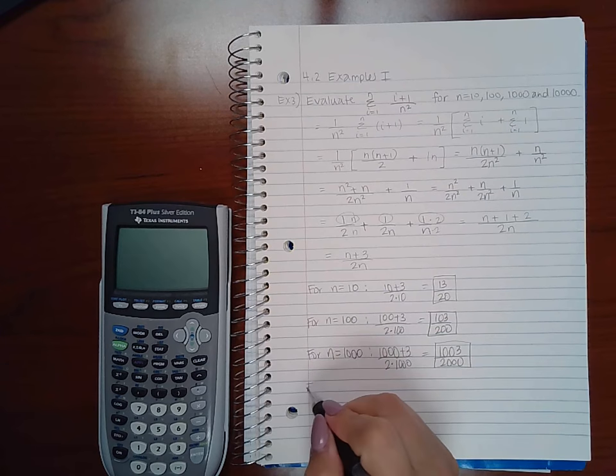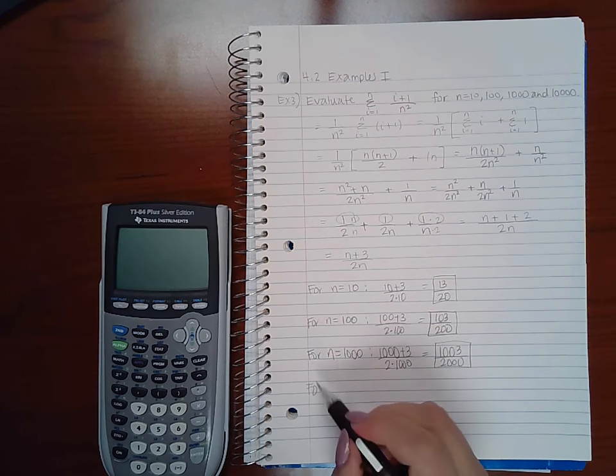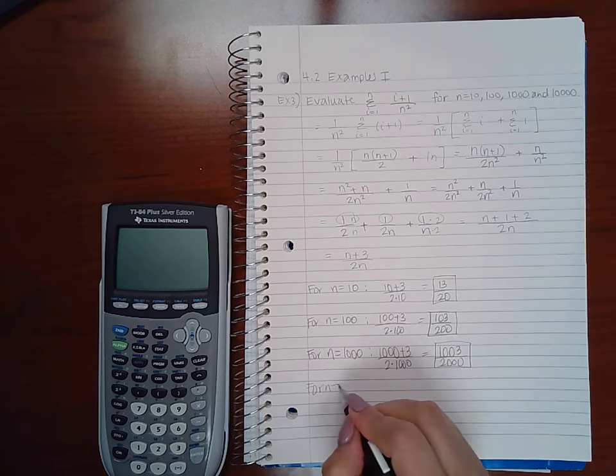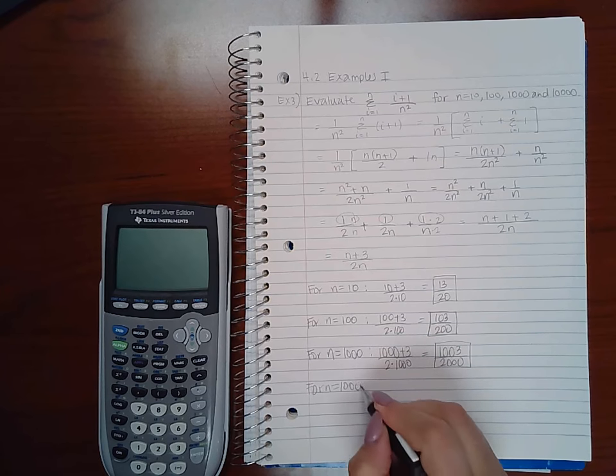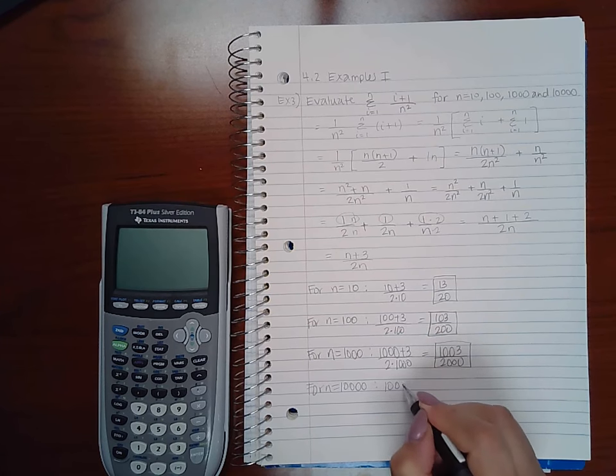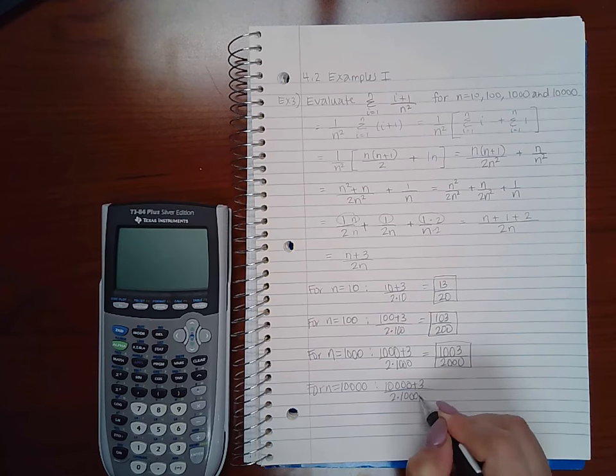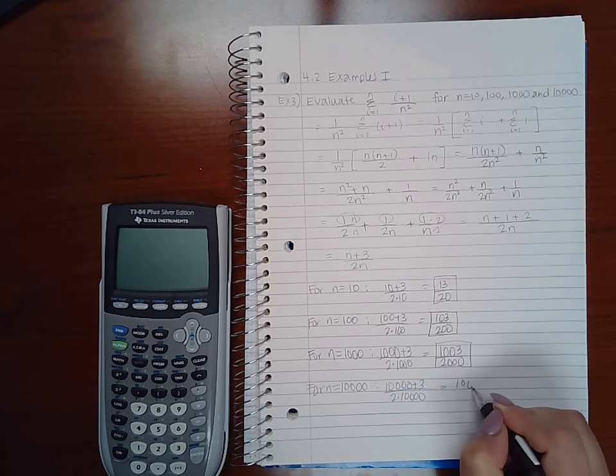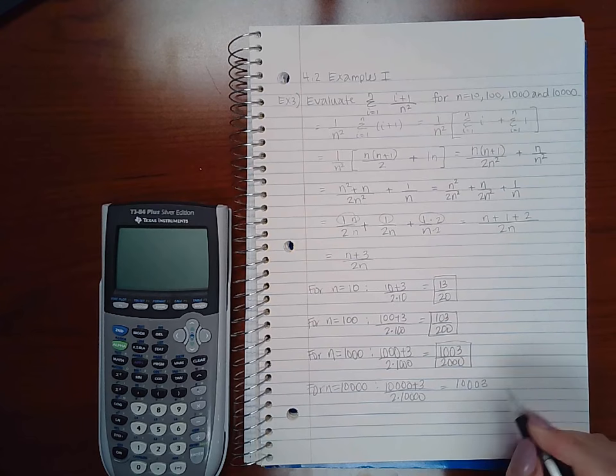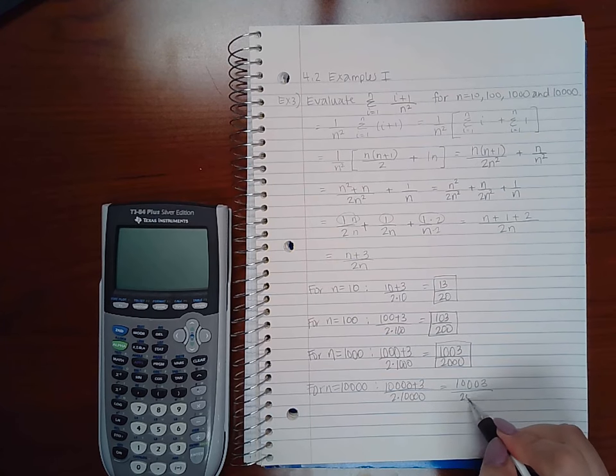And then finally for n equal to 10,000, we get 10,000 plus 3 over 2 times 10,000, which gives you 10,003 over 20,000.